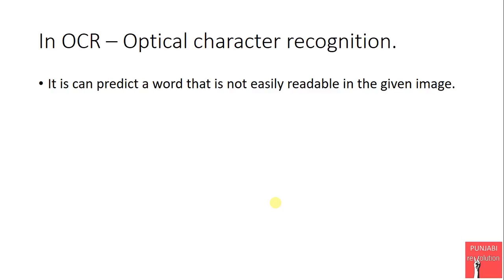So while scanning a newspaper or a book, if you find some word is missing or confusing, that missing word is very easily predicted by N-gram models. Similarly, if you use handwritten text for scanning, the handwritten text is normally confusing, so for that scenario it's also very helpful.